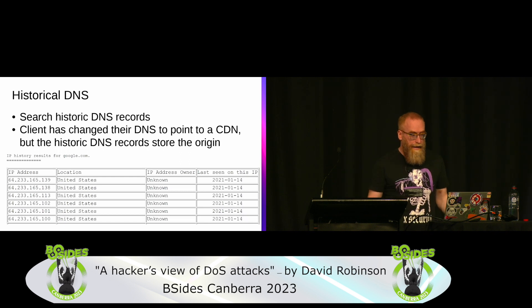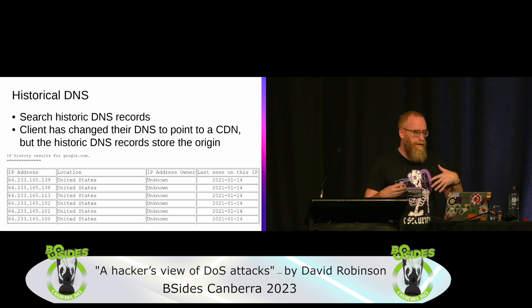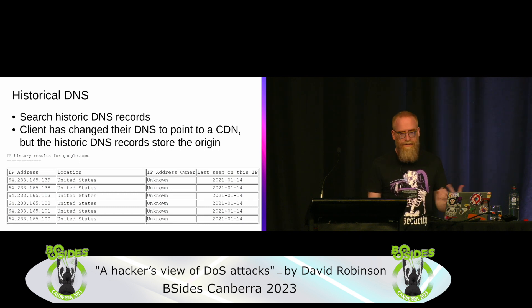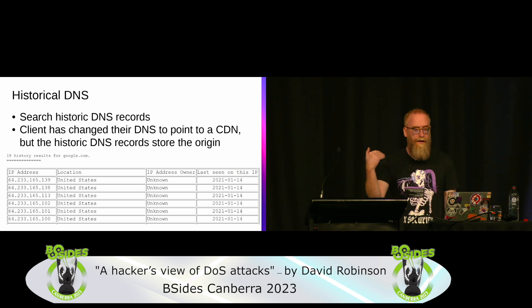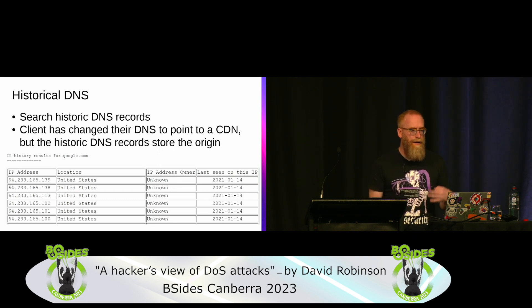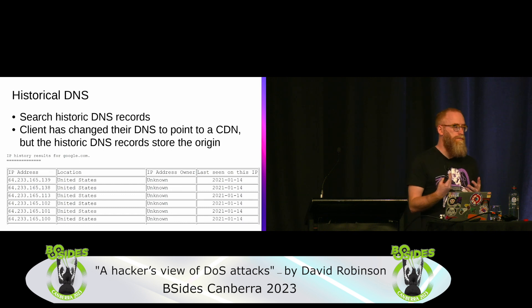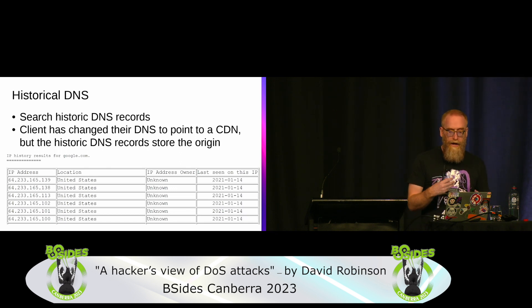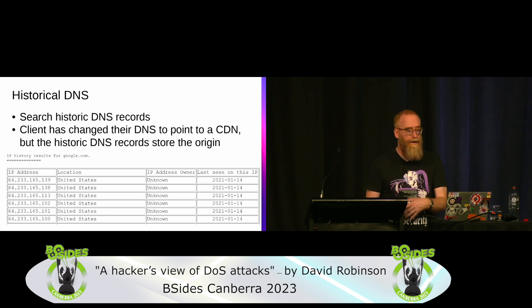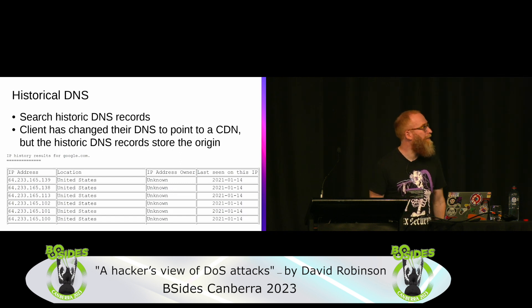Historical DNS is another useful technique. Regular DNS only shows current records, but some services store historical DNS, letting you look up previous IP addresses for a domain. This is particularly useful if a target recently moved behind a CDN. If you go back one or two IP addresses before the CDN IPs, that's probably the origin server — because it's common that when someone moves to a CDN they don't change the IP address of the origin server, so that old IP still hits it directly.